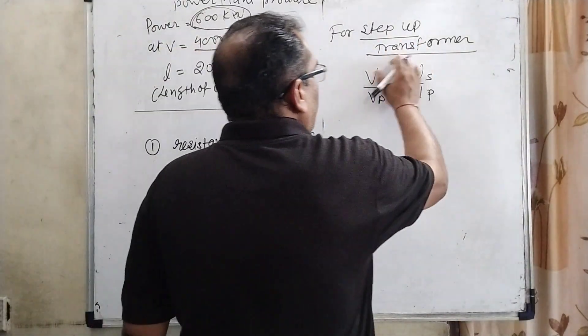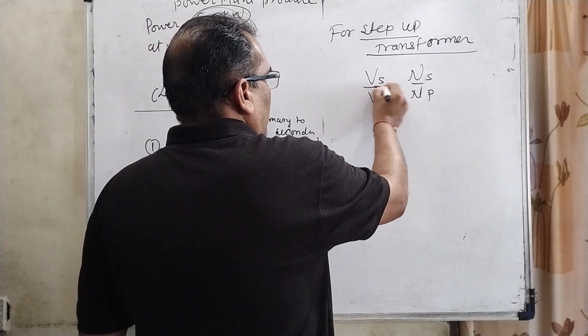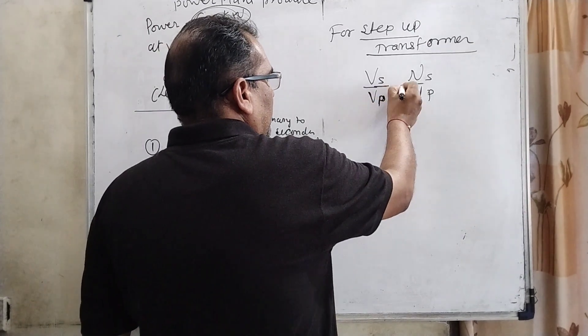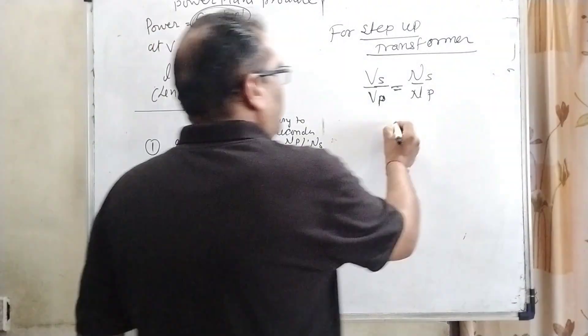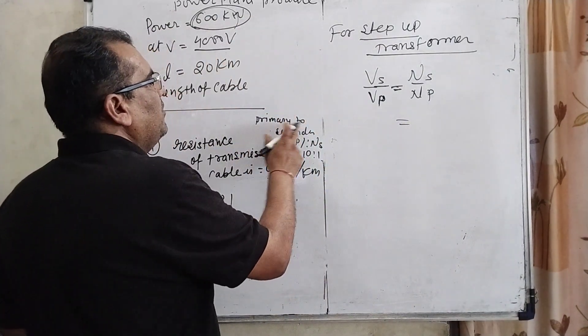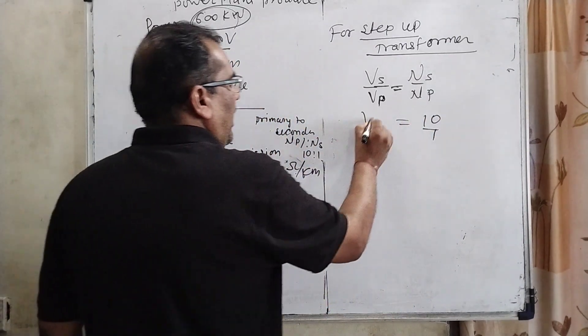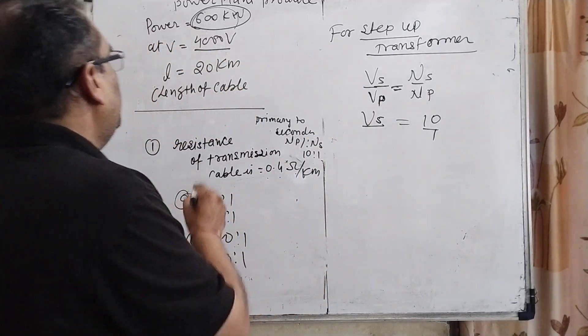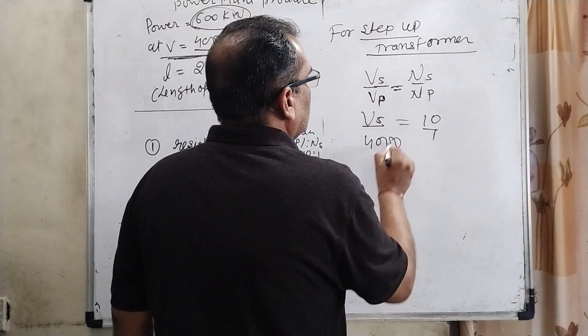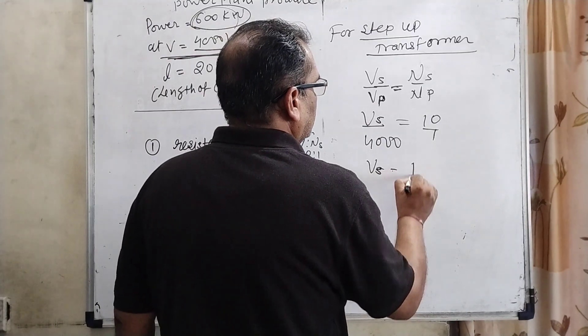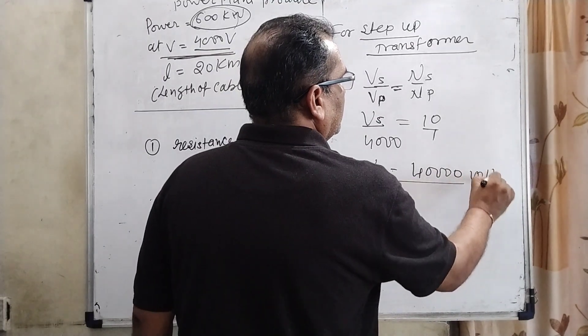Here for step up transformer Vs upon Vp equal to Ns upon Np. Here Ns upon Np means number of turns in the coil that is given that primary to secondary that is 1 to 10. And here we have to find out Vs because Vp means initial potential is given that 4000. So here we get Vs equal to 40,000 volt.